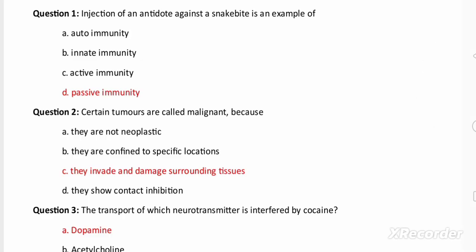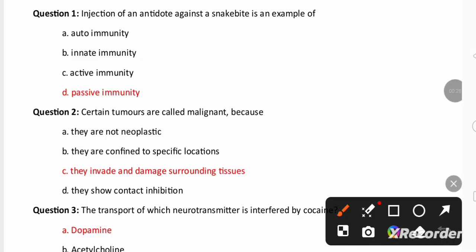So here is the first question and this question is from the chapter human health and disease. Antidote against snake bite is an example for passive immunity.